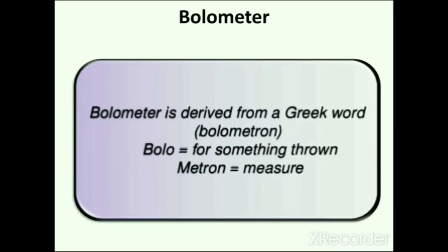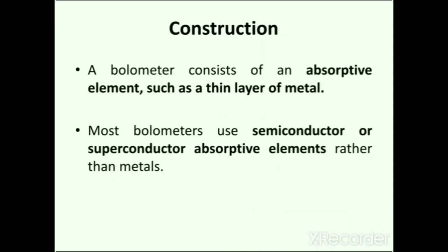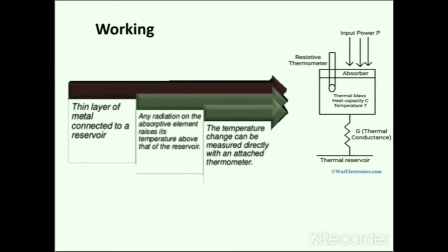The bolometer (derived from the Greek word bolometron: bolo meaning something thrown, metron meaning to measure) consists of an absorptive element such as a thin layer of metal connected to a thermal reservoir through a thermal link. The thermal reservoir is maintained at a specific constant temperature. When radiation falls on the absorptive element, it raises its temperature above that of the reservoir — the greater the absorbed power, the higher the temperature. The temperature change can be measured with an attached resistive thermometer, or the resistance of the absorptive element itself can be used as a thermometer.